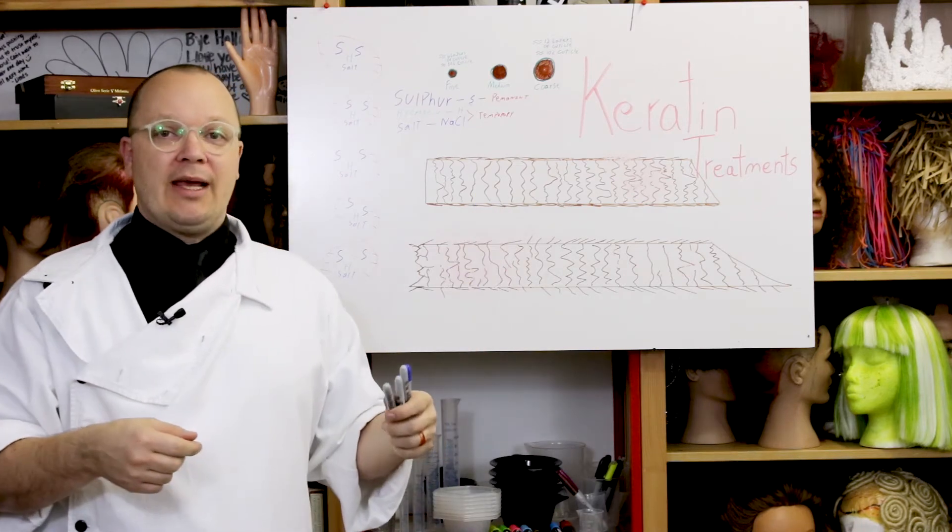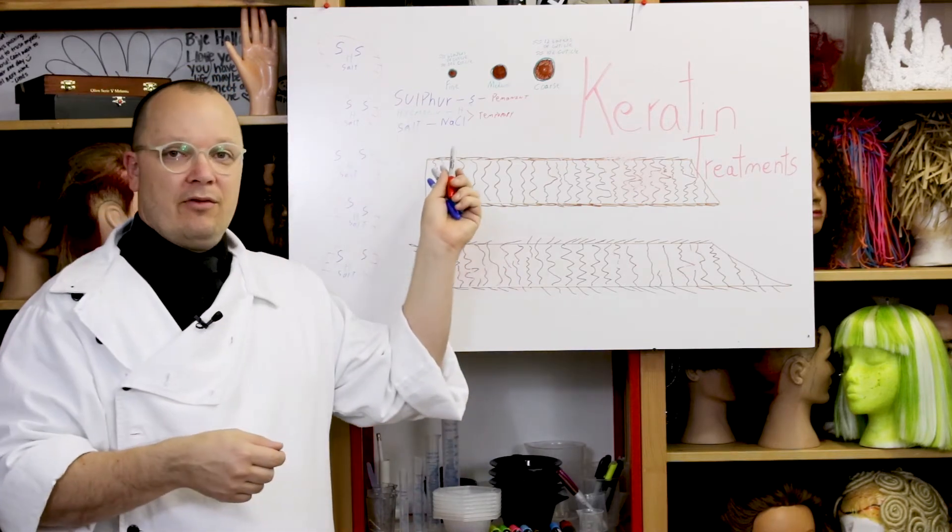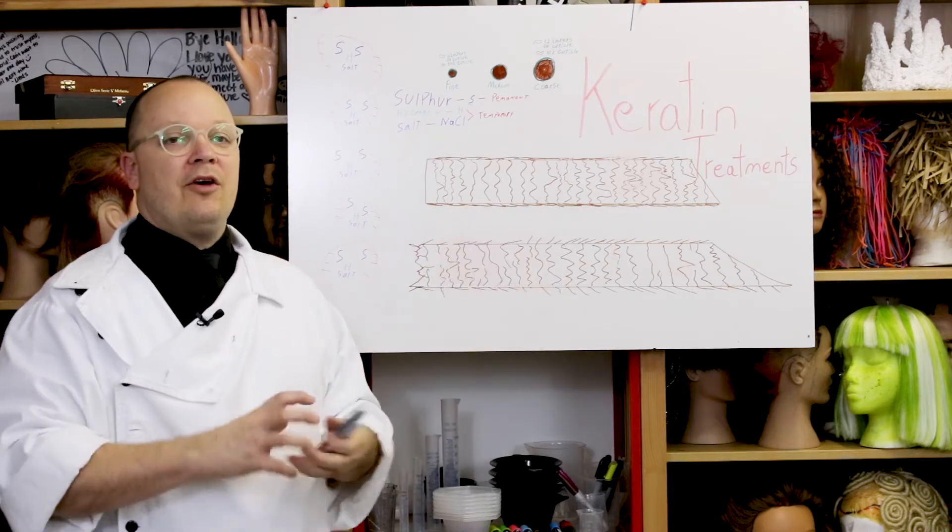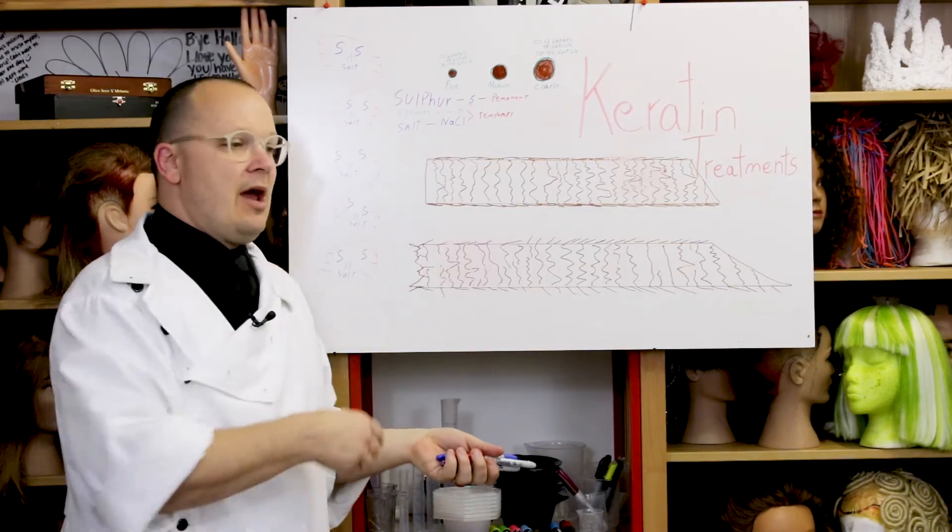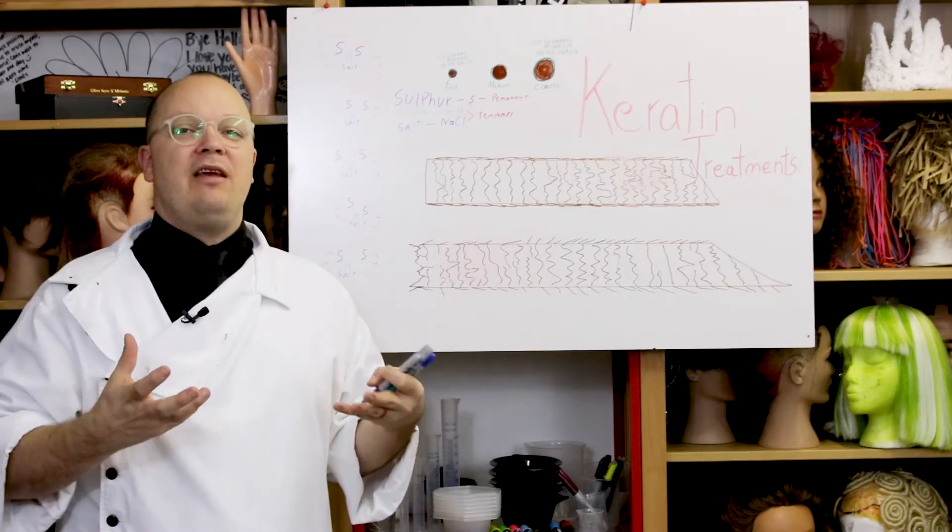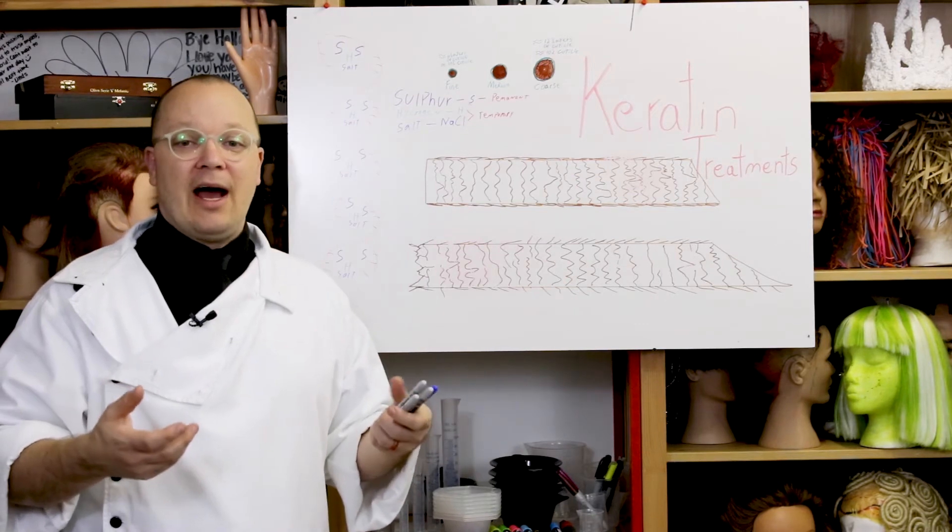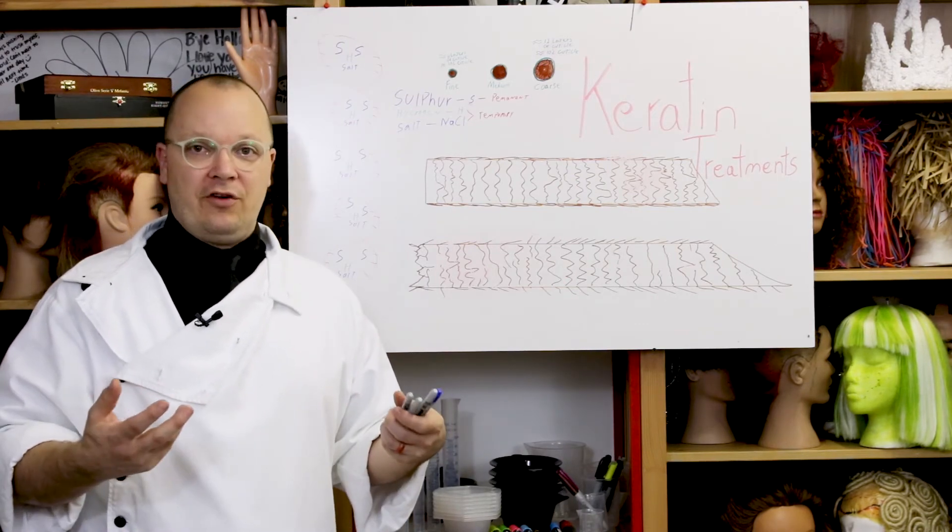When we apply moisture or heat again, we're able to reshape those bonds. When you shampoo your hair, those bonds are reset and back to their sort of default, wherever our natural texture lies or wherever we've permanently altered it to.